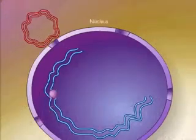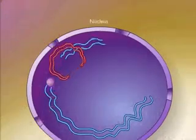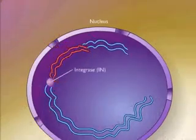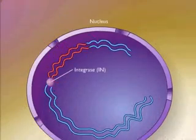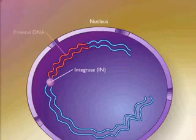The resulting circular DNA is then moved to the nucleus and inserted into the host cell chromosome by the viral integrase (IN) enzyme. The integrated viral DNA is now referred to as proviral DNA.